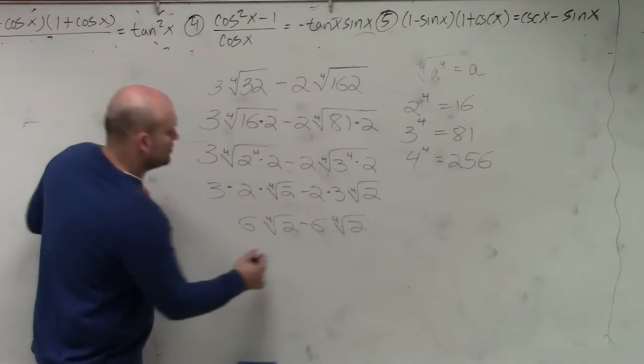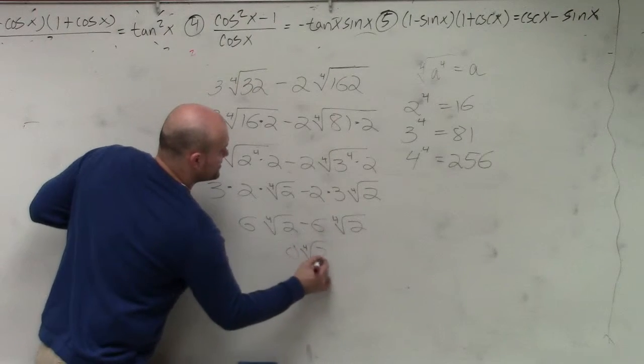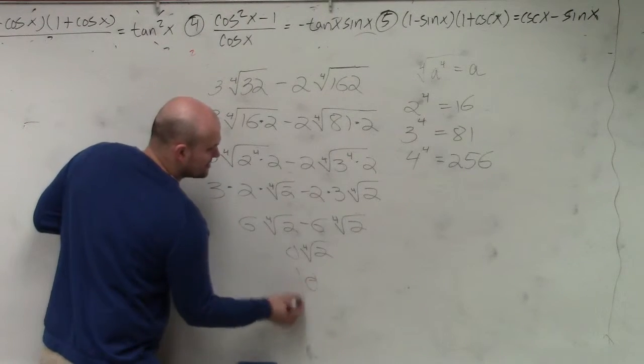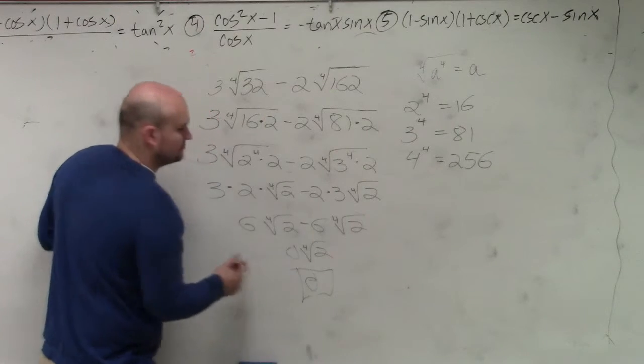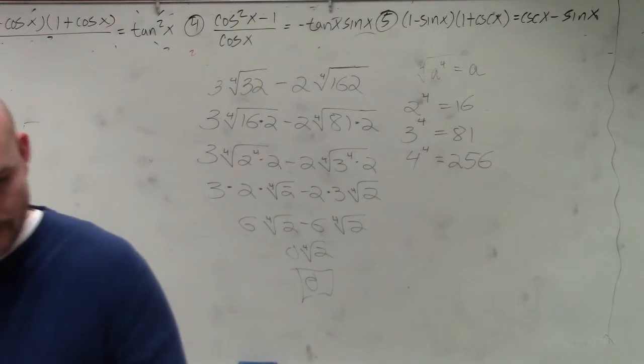So the answer is 0. Zero times anything is 0, so it's 0.